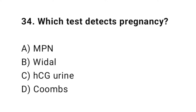Question number thirty-four: which test detects pregnancy? The right answer is C — HCG urine test. HCG hormone in urine confirms pregnancy.